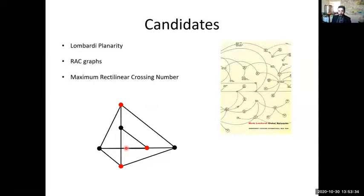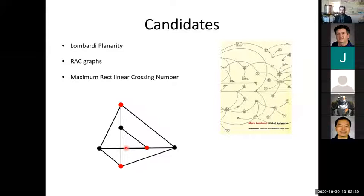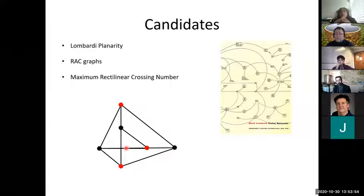Typically, encoding in the existential theory of the reals is just like encoding in satisfiability — once you're familiar with it, it's relatively straightforward. Doing the hardness proof is typically the hard part. So that theory feels natural for graph drawing: does there exist positions that satisfy some properties? Are there natural graph drawing problems that do not fit in the existential theory of the reals?